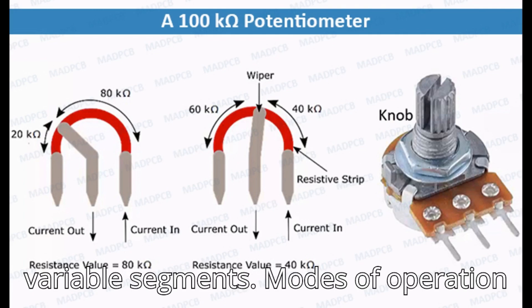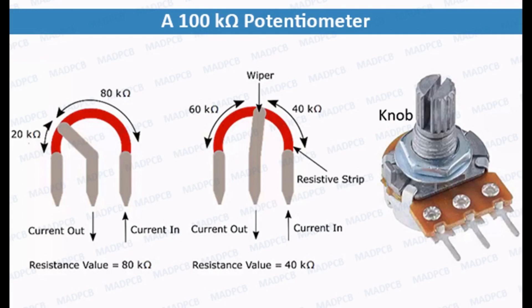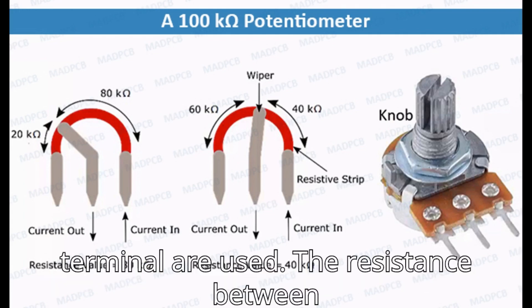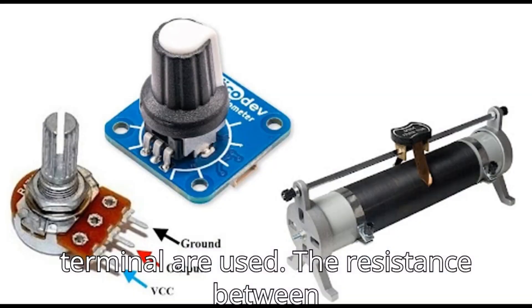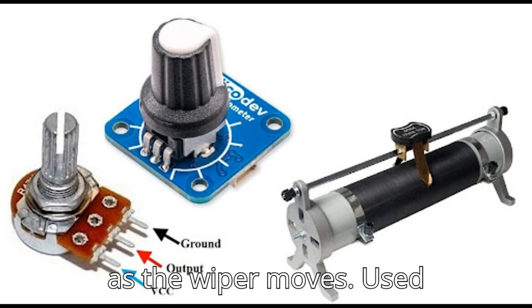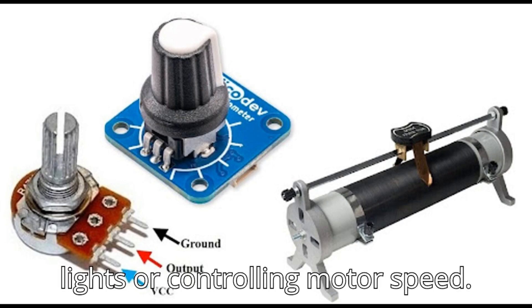Modes of operation. First, as a variable resistor (rheostat mode): only one end terminal and the wiper terminal are used. The resistance between the wiper and the fixed terminal changes as the wiper moves. This is used for controlling current, such as dimming lights or controlling motor speed.